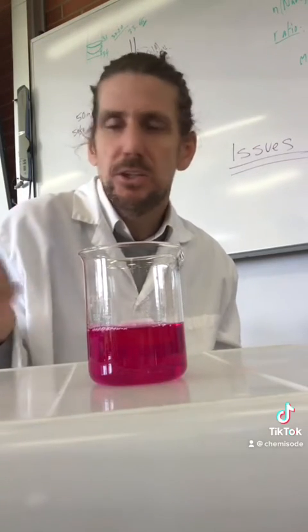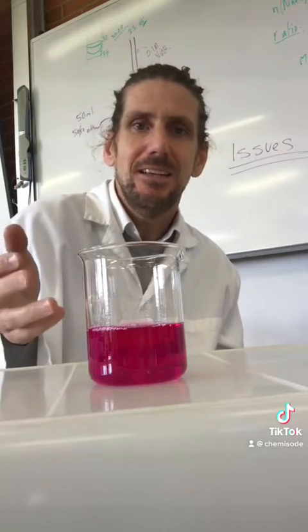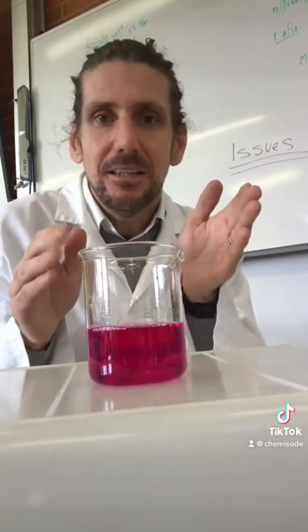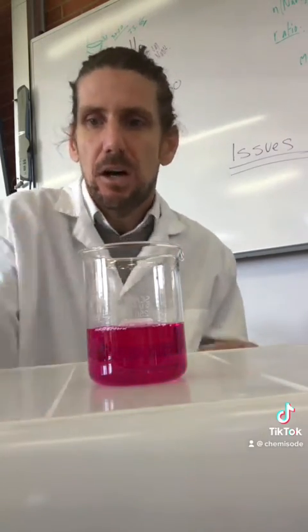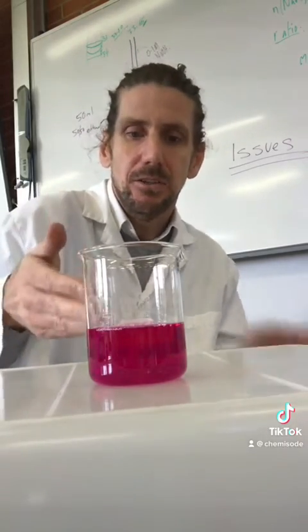We use that knowledge in titrations to be able to understand when the acid equals the base. Obviously I whacked in a whole bunch of base that time, so it's gone completely into my other color. However in a titration we add the base really slowly so we can see that one point when we've got one drop more base than the acid.